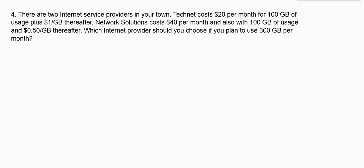It says there are two internet service providers in your town. TechNet costs $20 per month for 100 gigabytes of usage, plus a dollar per gigabyte thereafter. Network Solutions costs $40 per month, also with 100 gigabytes of usage, and 50 cents per gigabyte thereafter. Which internet provider should you choose if you plan on using 300 gigabytes per month?